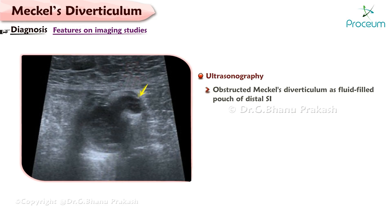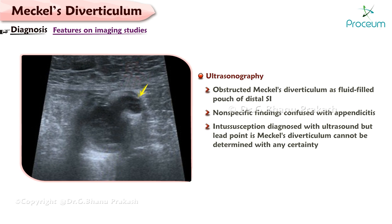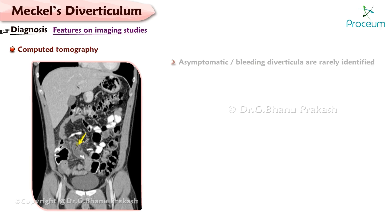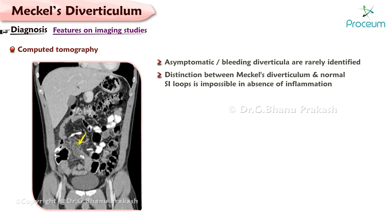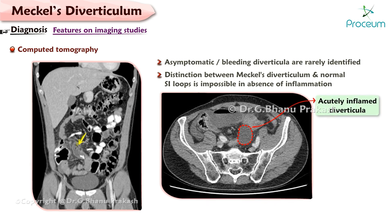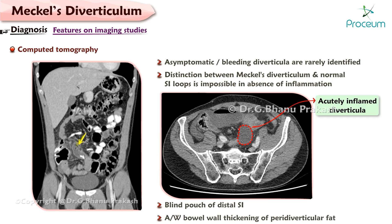Ultrasonography: an obstructed Meckel's Diverticulum may be identified as a fluid-filled pouch off the distal small intestine. Ultrasound findings are nonspecific and easily confused with appendicitis. Intussusception can be diagnosed with ultrasound, but attributing the lead point to a Meckel's Diverticulum cannot be determined with certainty. Computed Tomography: asymptomatic or bleeding diverticula are rarely or infrequently identified with CT. A distinction between a Meckel's Diverticulum and normal small intestinal loops is virtually impossible in the absence of associated inflammation. Acutely inflamed diverticula can be identified as a blind pouch of the distal small intestine, typically with associated bowel wall thickening of the paradiverticular fat.